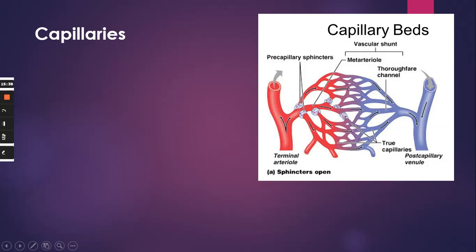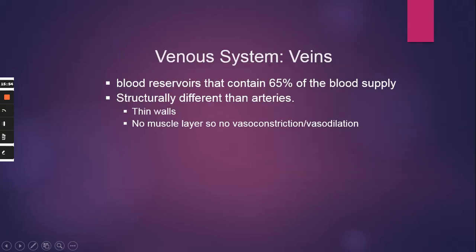That flips us into talking about the veins and the venous system. Our veins are blood reservoirs — they contain about 65% of the blood supply at any one given time. They are very structurally different than arteries. They have very thin walls, much thinner than arteries. Also, they have no significant muscle layer, so they do not vasoconstrict or vasodilate.